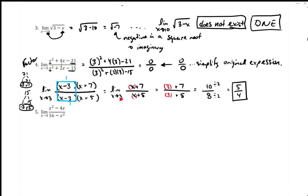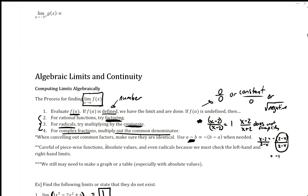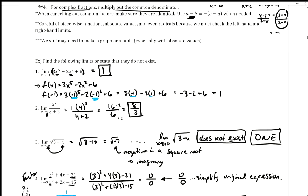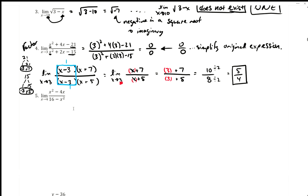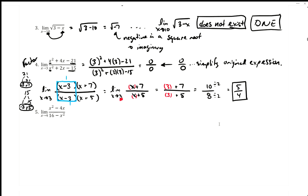Let's try another factoring problem — number five. You could also check these with a calculator, but I'm doing these by hand. First, let's see what happens when we plug in 4: we get 4² minus 4 times 4 over 16 minus 4², which gives 16 minus 16 over 16 minus 16, so zero over zero. That means we need to simplify.